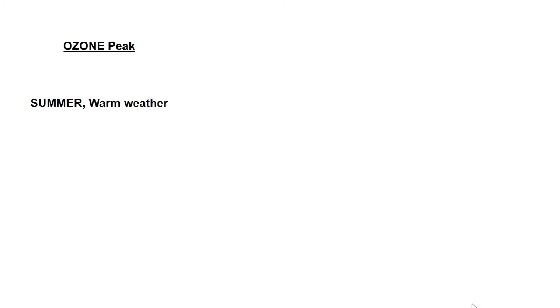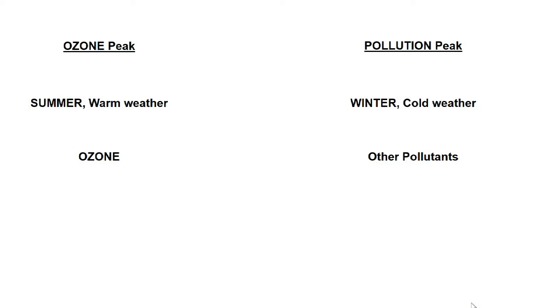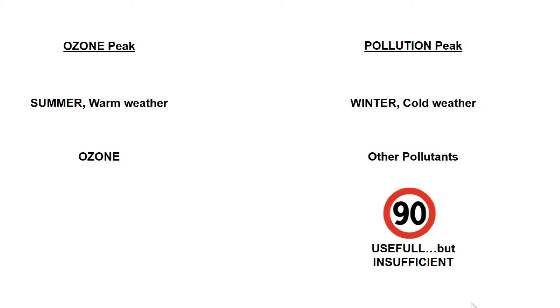Ozone peaks are sometimes accompanied by the famous smog. Smog is the polluted fog of big cities composed of ozone, nitrogen and sulfur oxides and other harmful pollutants, which deteriorate breathing, especially in children and the frail. The summer ozone peaks have nothing to do with pollution peaks in winter, which are due to the accumulation of pollutants such as nitrogen oxides and smaller particles when cold weather and no wind prevent their dispersion. As these pollutants stem mainly from road traffic, authorities can force motorists not to exceed, for example, 90 km per hour on motorways in Belgium — though this emergency measure is largely insufficient.